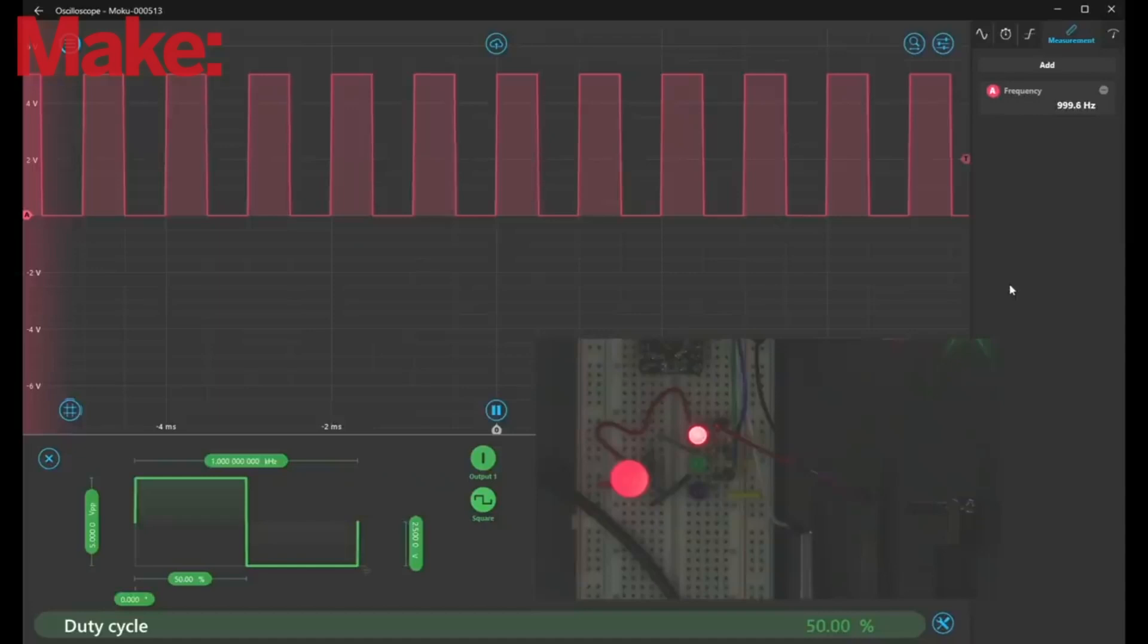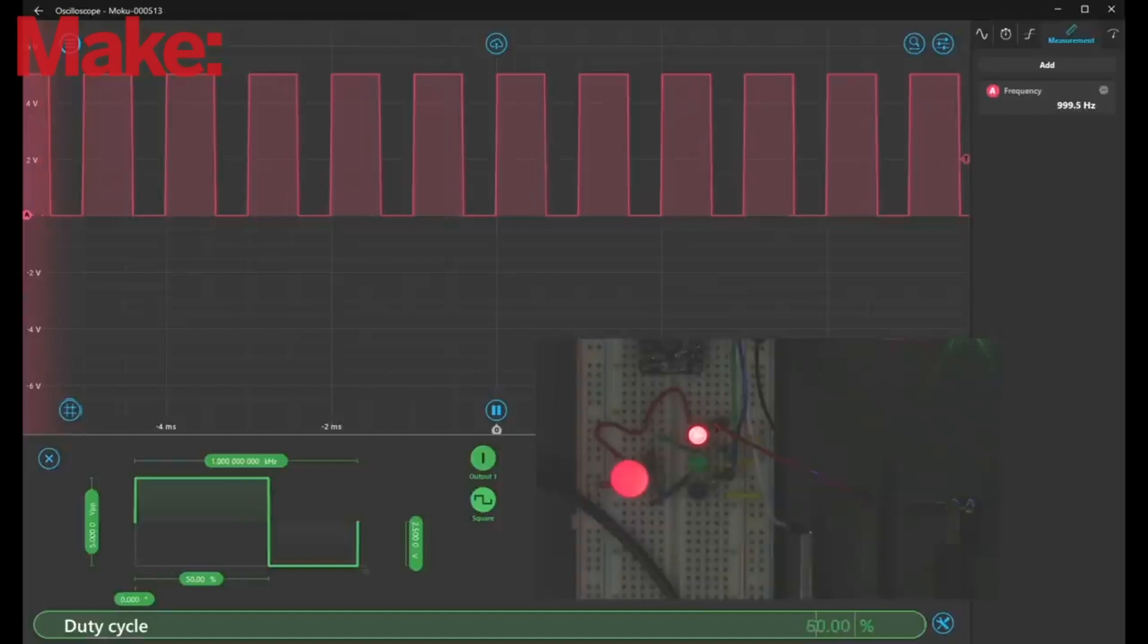PWM stands for Pulse Width Modulation, so when we create a repeating series of square waves, or pulses, at a particular frequency and then adjust, or modulate, the duty cycle, or width, of those pulses, we're creating a pulse-width modulated square wave, which people usually just call a PWM.